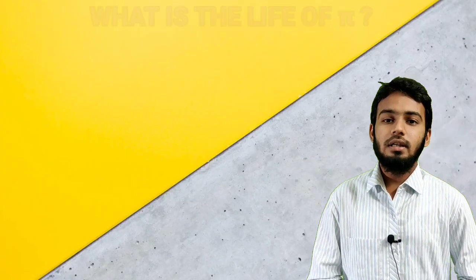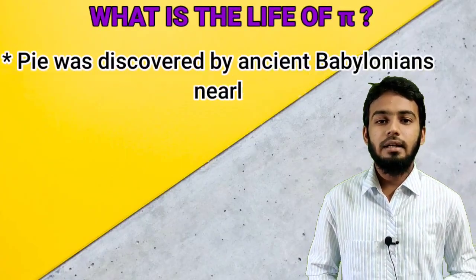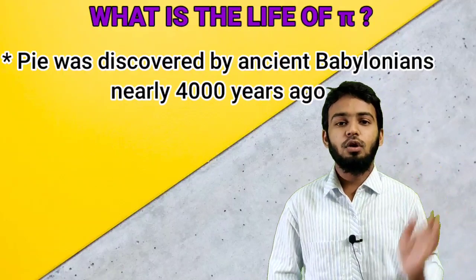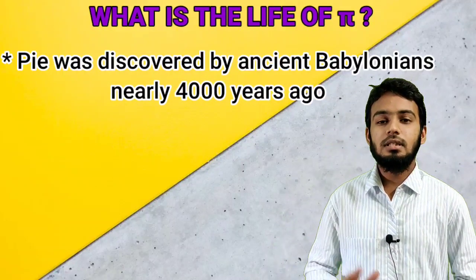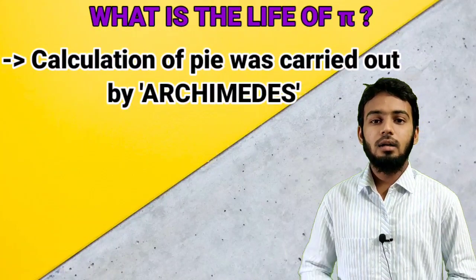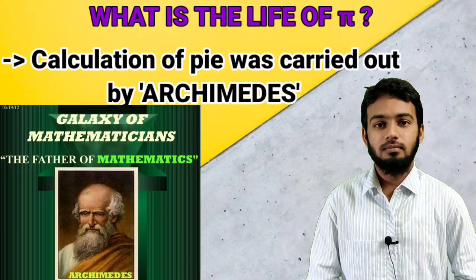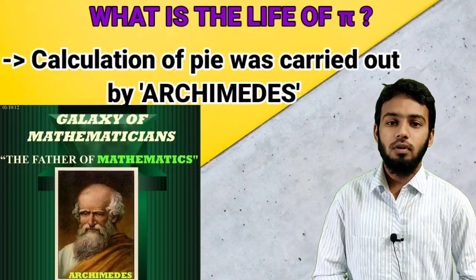Next, what is the life of Pi? Pi was discovered by ancient Babylonians nearly 4000 years ago. The first calculation of Pi was carried out by Archimedes, who is also known as the father of mathematics.